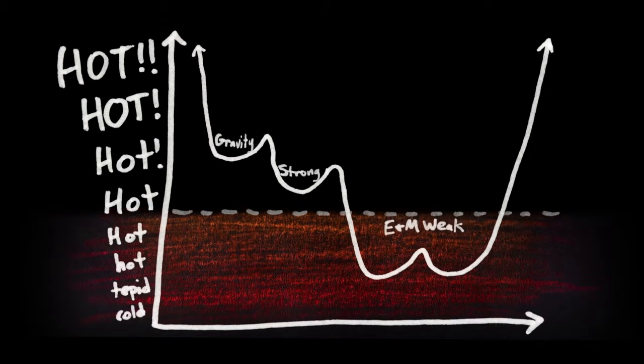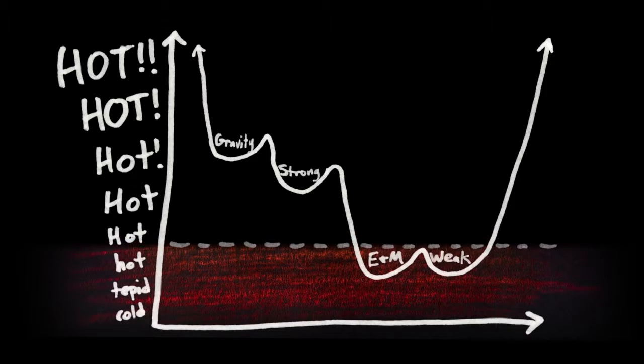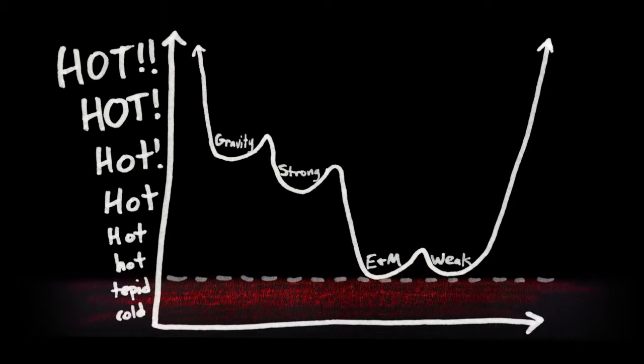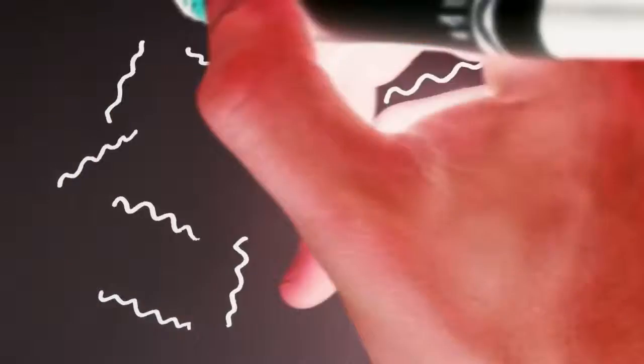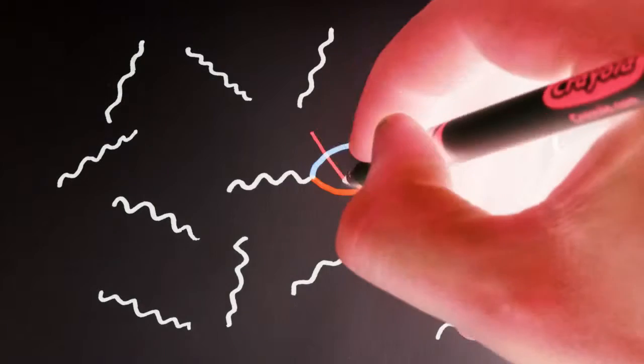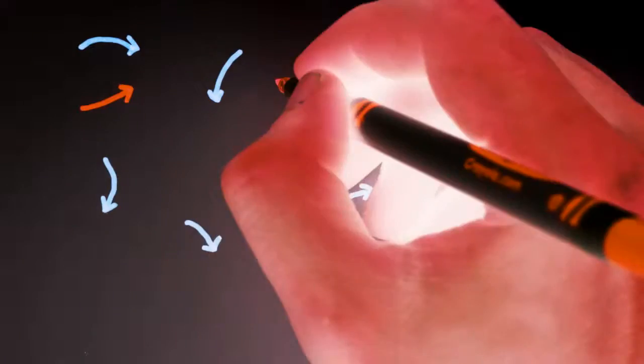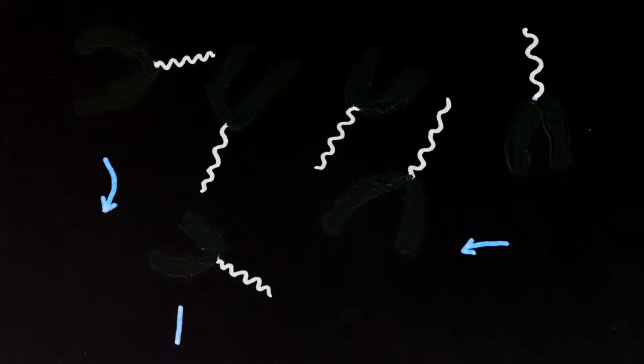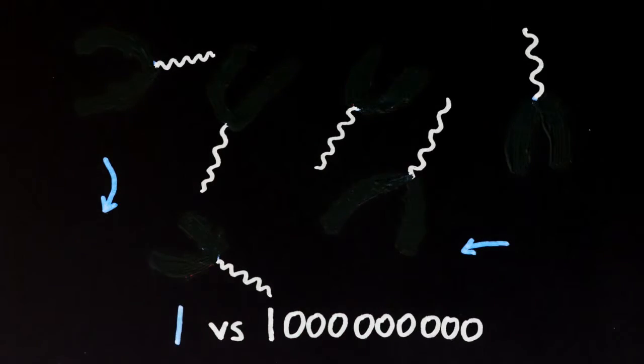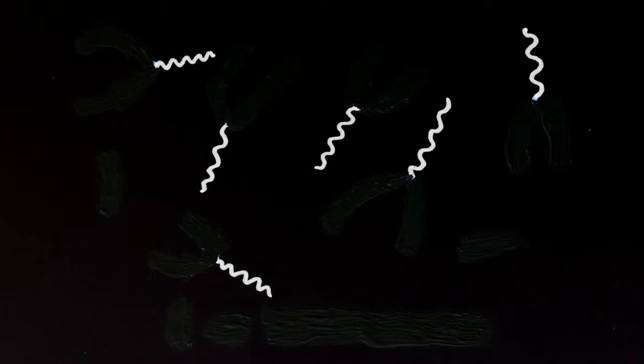As the universe continued to cool, the electro-weak force split into the electromagnetic force and the weak nuclear force, completing the four distinct and familiar forces of nature. While the energy of the photon bath continued to drop, pairs of matter-antimatter particles could no longer be created spontaneously from the available photons. All remaining pairs of matter-antimatter particles swiftly annihilated, leaving behind a universe with one particle of ordinary matter for every billion photons. And no antimatter. Had this matter over antimatter asymmetry not emerged, the expanding universe would forever be composed of light and nothing else. Not even astrophysicists.